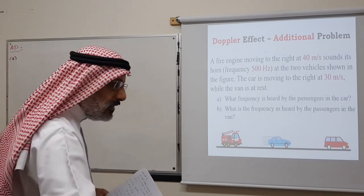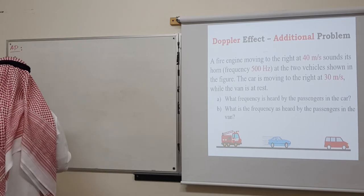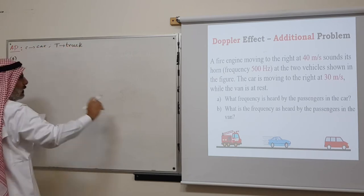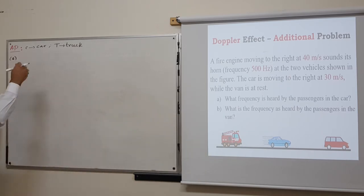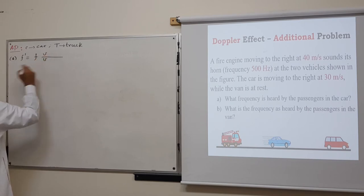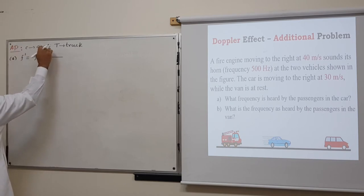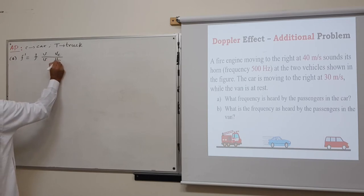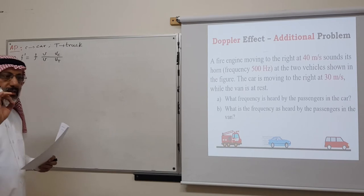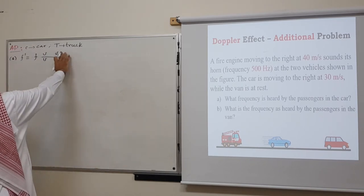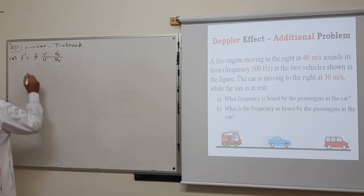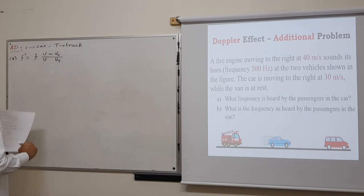Let C be the car and T be the truck. For the frequency heard by people in the car: f' = f × (V ± V_C) / (V ∓ V_T). The car (detector) is moving away from the truck — away is the lower sign, giving minus V_C. The truck (source) is moving toward the car — toward is the upper sign, giving minus V_T. So: f' = 500 × (343 − 30) / (343 − 40).